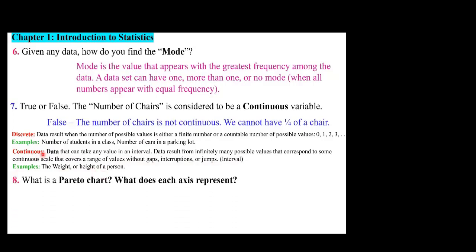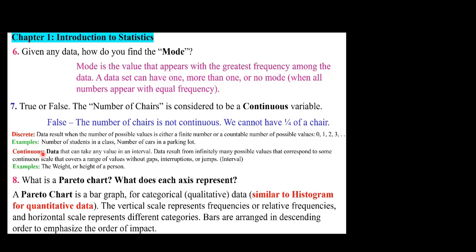What is a Pareto chart and what does each axis represent? A Pareto chart is a bar graph for categorical or qualitative data, similar to a histogram for quantitative data. The vertical scale represents frequencies or relative frequencies, and the horizontal scale represents different categories. Bars are arranged in descending order to emphasize the order of impact.